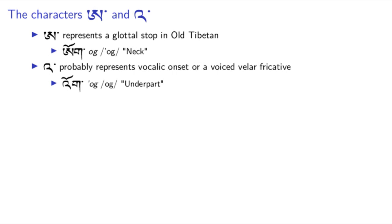If you've ever looked at Modern Tibetan, you know that the latter is now a glottal stop word-initially and the former is just a vowel without a consonant, but this is actually not how it started out. In fact, the former in Old Tibetan may have signified a glottal stop, while the latter was either simply vocalic onset — that is, the absence of a glottal stop or other consonant — or a voiced velar fricative, or pre-nasalization of the following consonant.